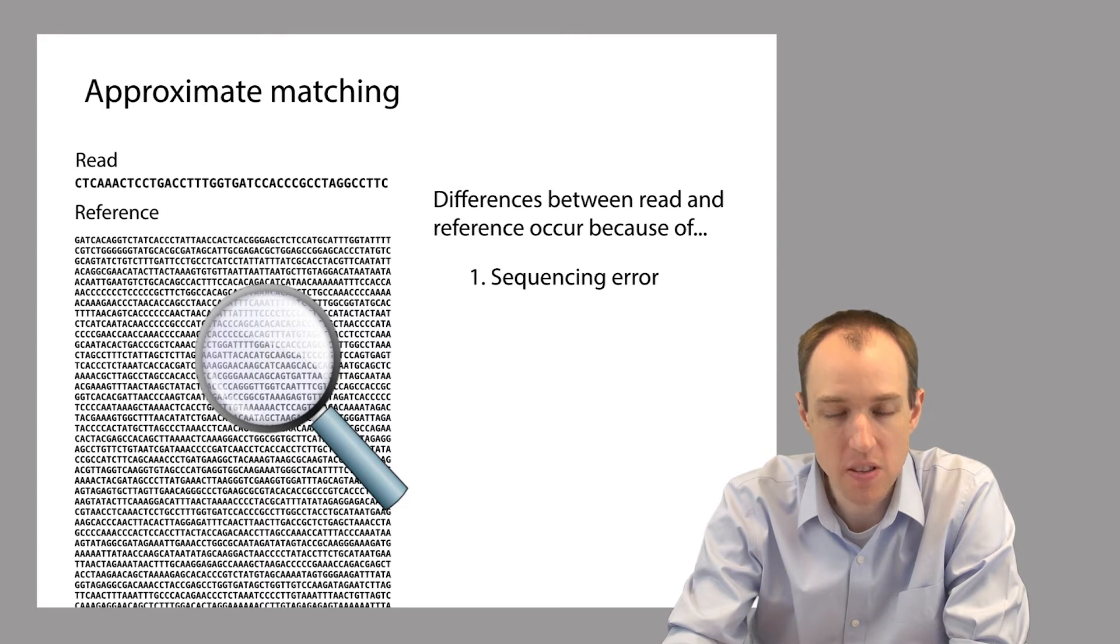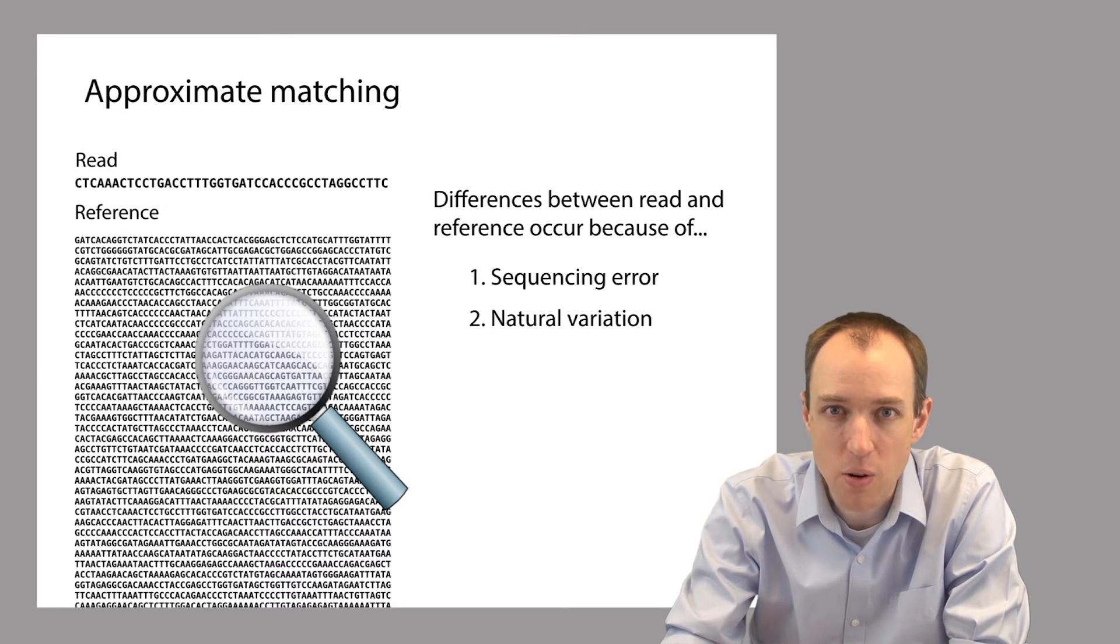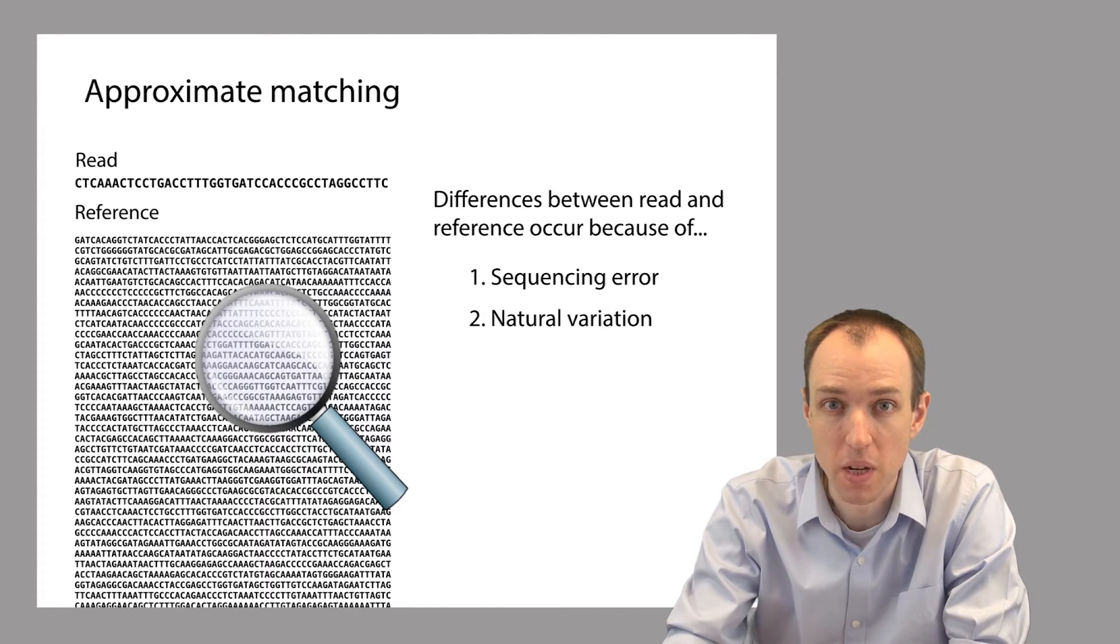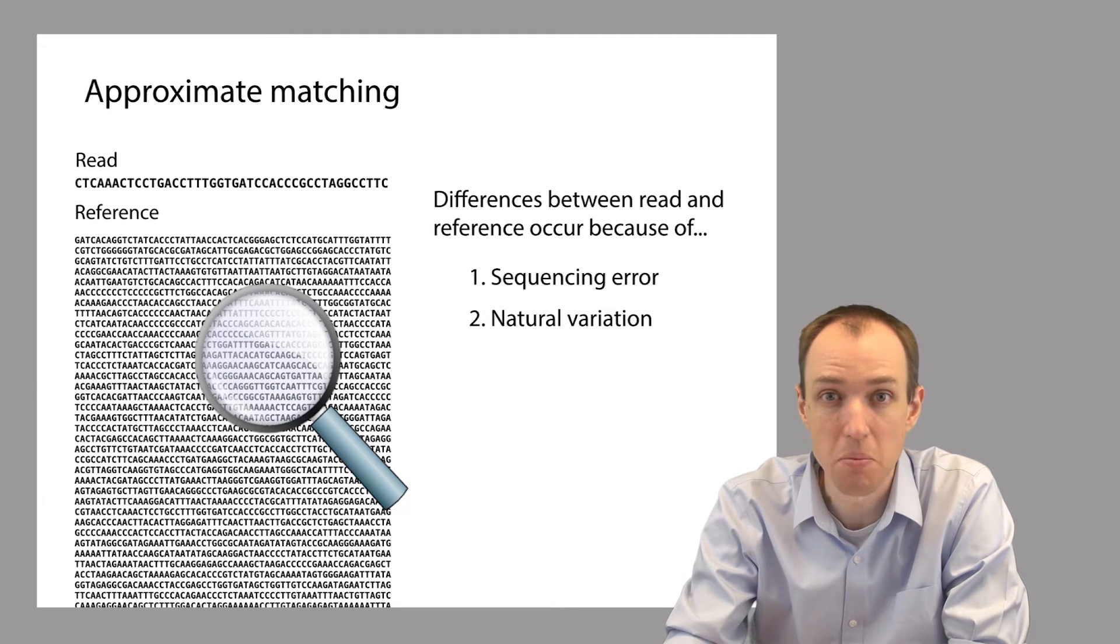Another reason we might see differences is because the reference genome is not the same as the genome that we're studying. If you have two unrelated humans, then their genome sequences are something like 99.8% or 99.9% similar but not identical, which means that every once in a while there will be a difference between a base in the sequencing read and a base in the reference genome.